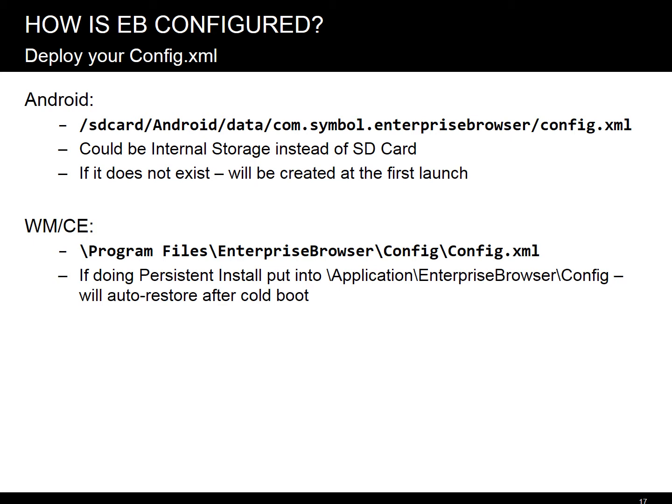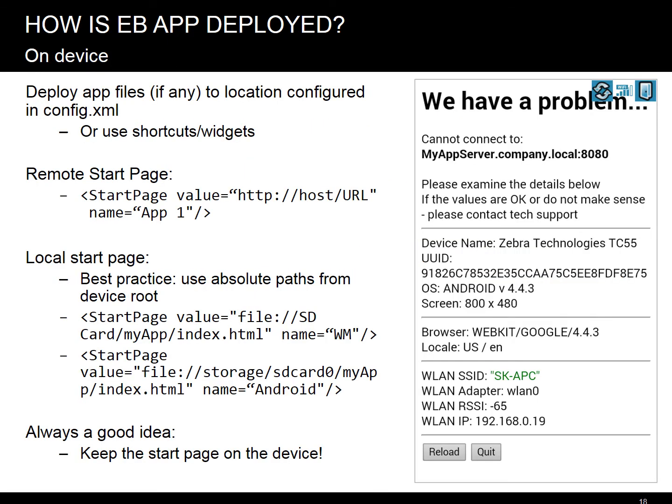On WM/CE, the config file resides in the installation directory, in the slash config subdirectory. If you deployed using the persistent installation mode, you would want to put the config onto the application partition so that it's auto-restored after cold boot. Now, EB is configured, but there's one more piece, which is the app.